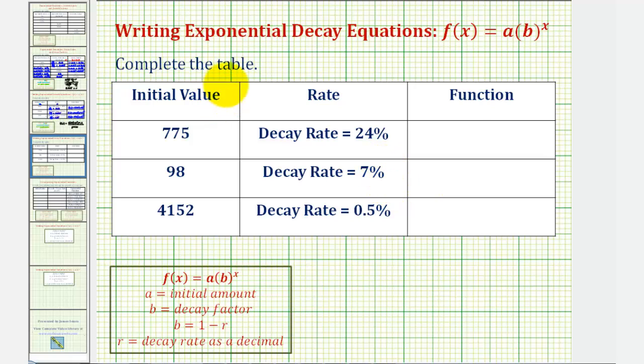In this question, we're asked to write the exponential decay function given the initial value and the decay rate expressed as a decimal. With the exponential function, we'll be in the form f(x) equals a times b raised to the power of x, where a is the initial value, and b, the base, also called the decay factor, is equal to one minus r, where r is the decay rate as a decimal.